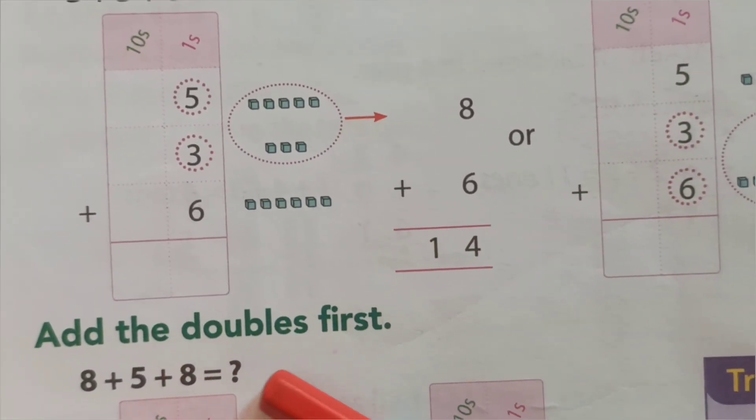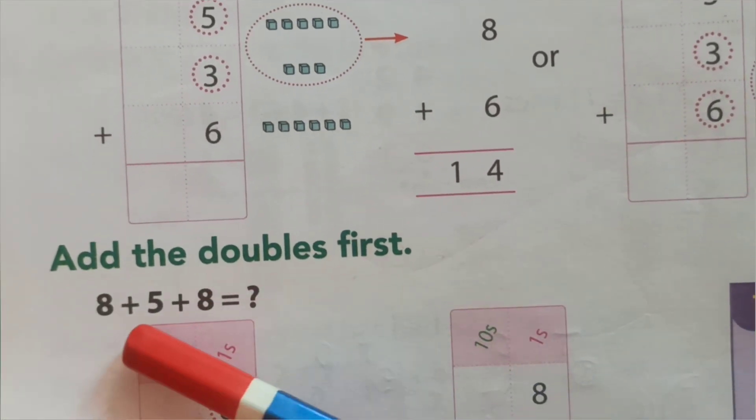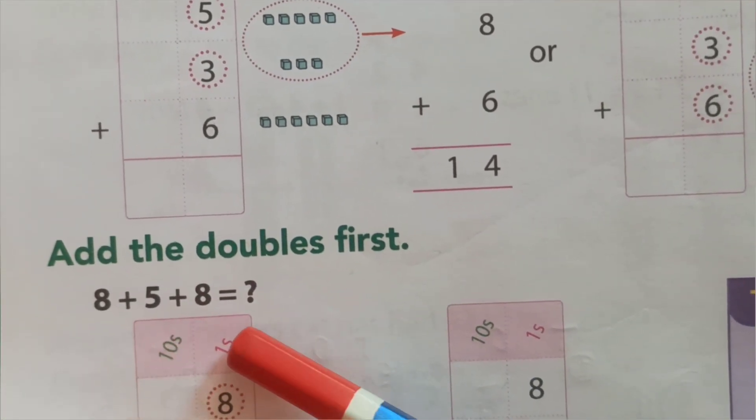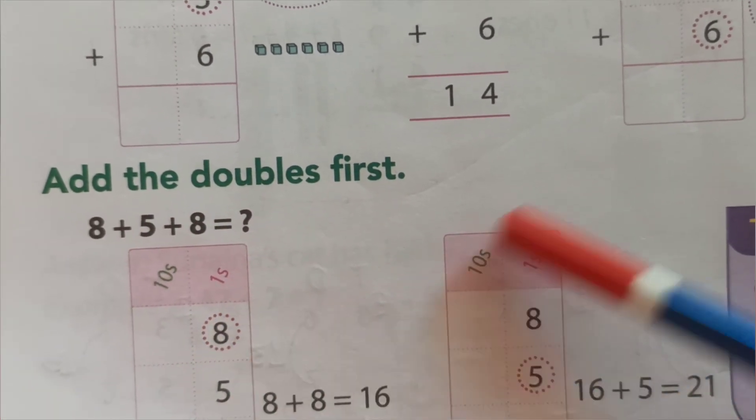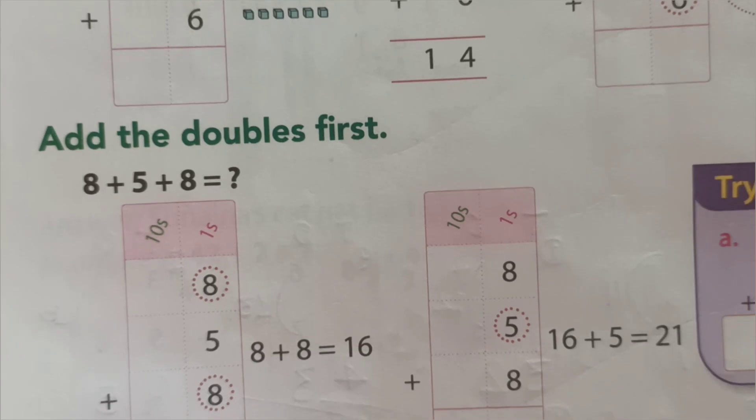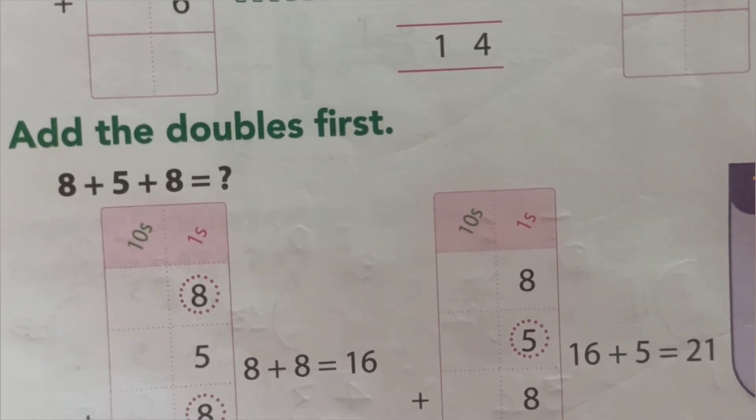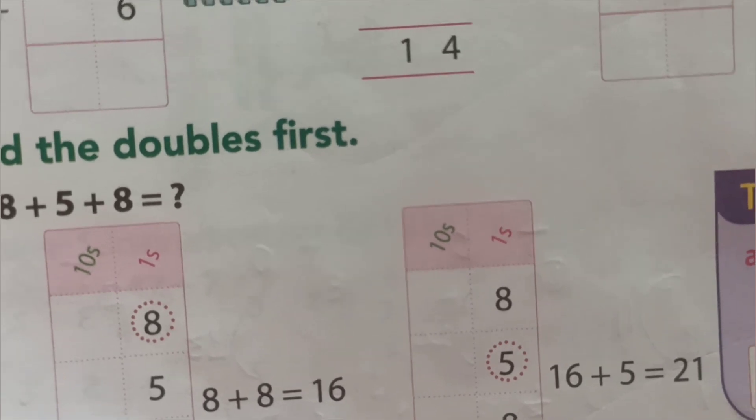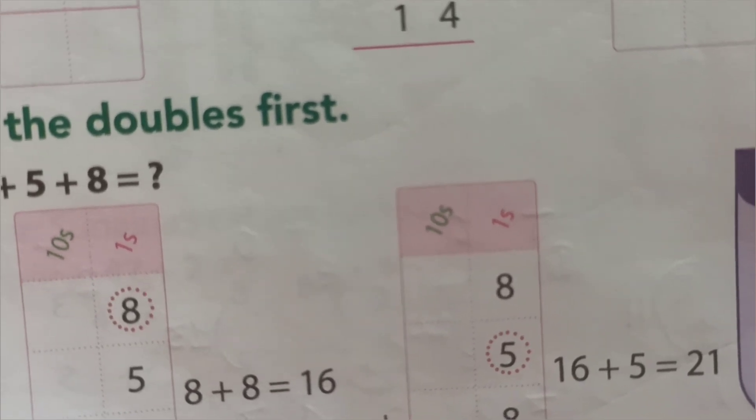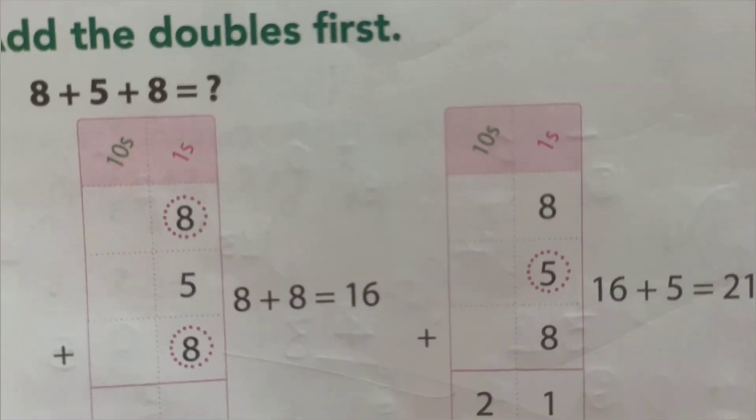See, add the doubles first. 8 plus 5 plus 8. This one, 8, 8. You add first. See, 8 plus 8, 16. And this, all of you know.